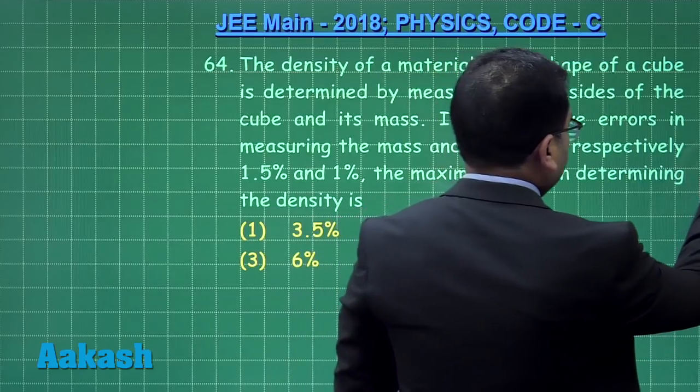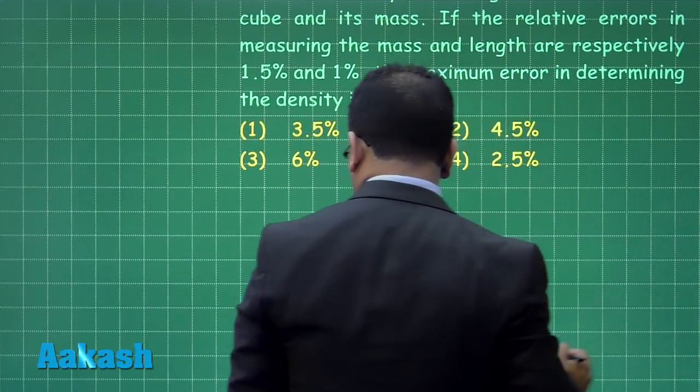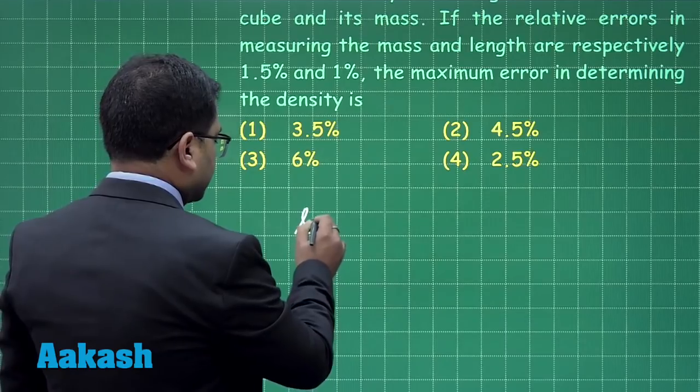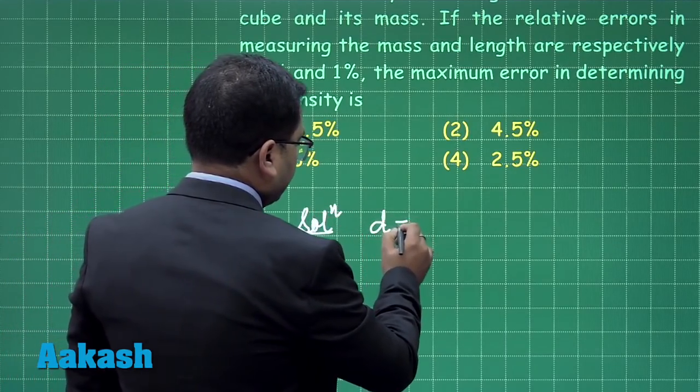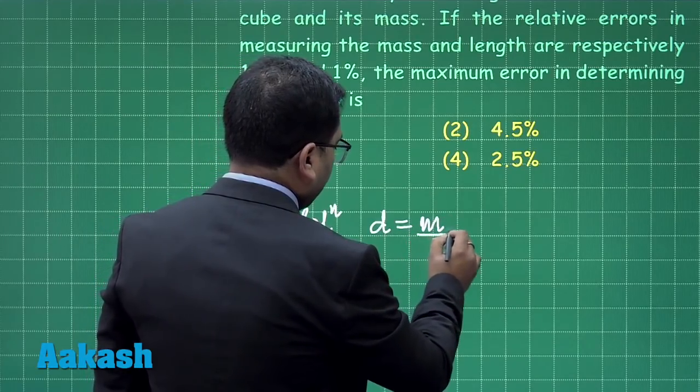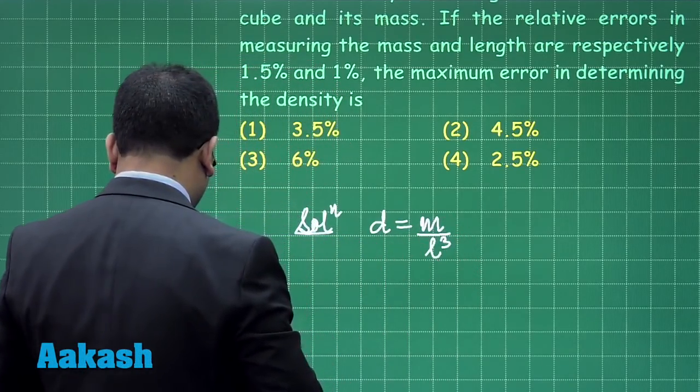Alright, let us begin. The solution is straightforward. Let me write the definition of density here: that is mass per unit volume, which is d = m/L³.